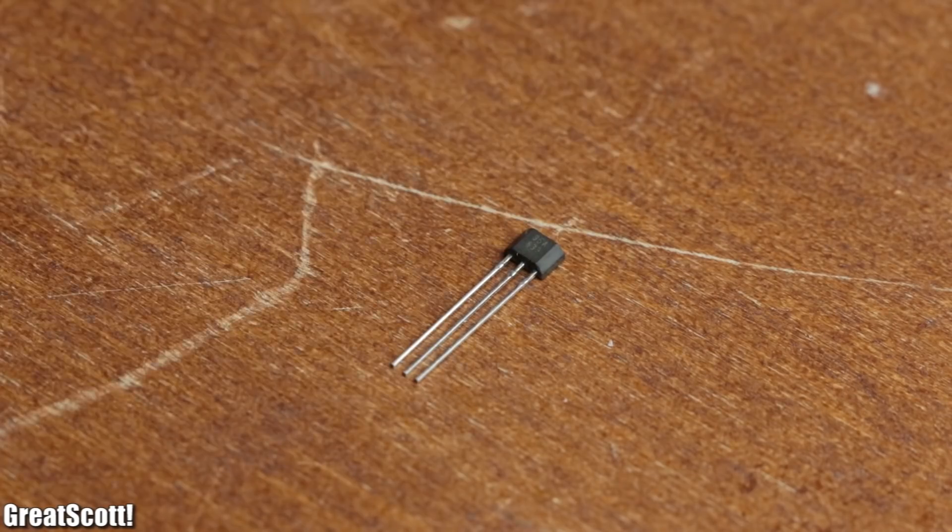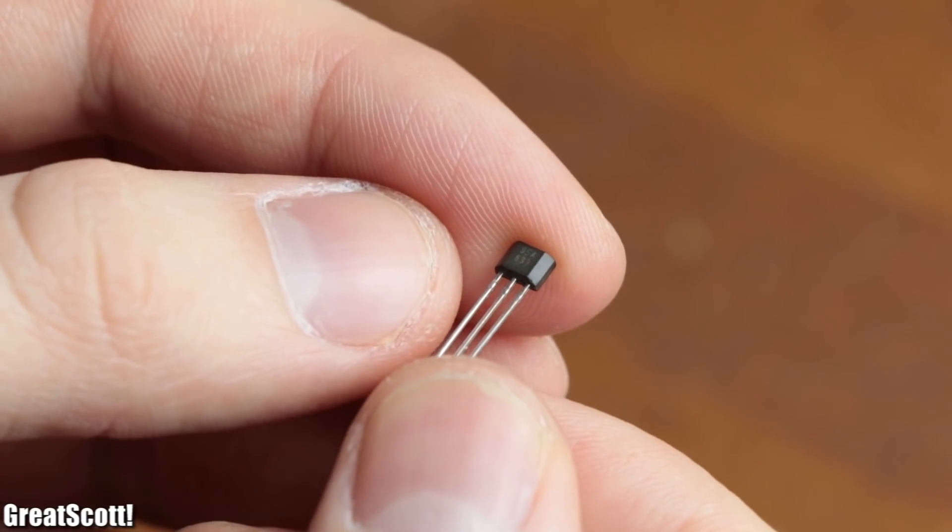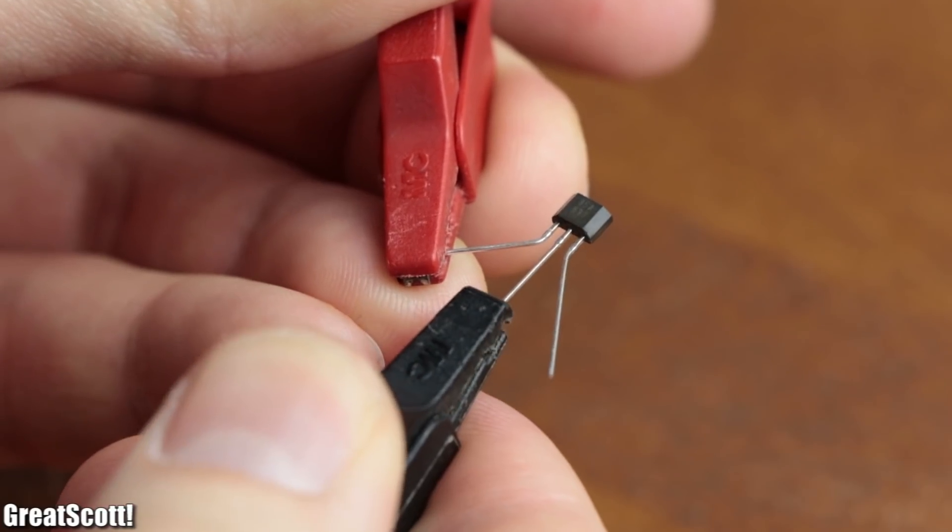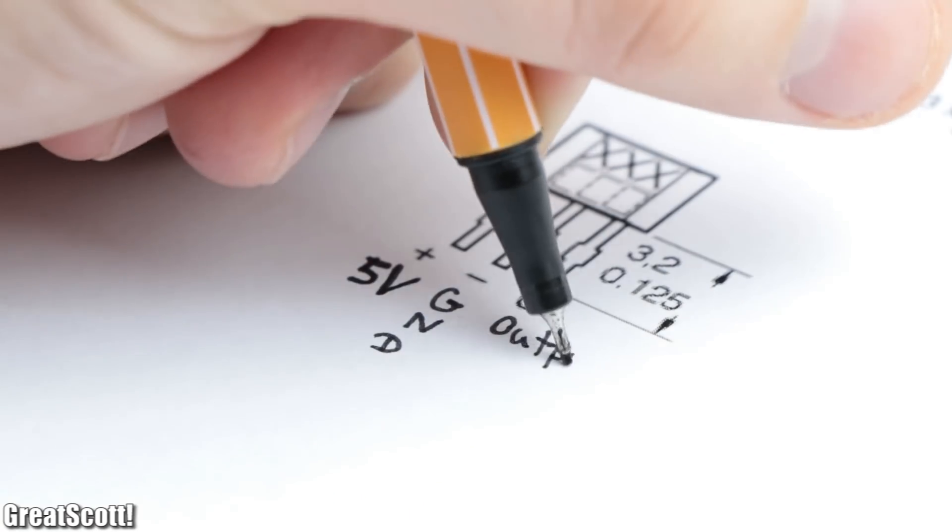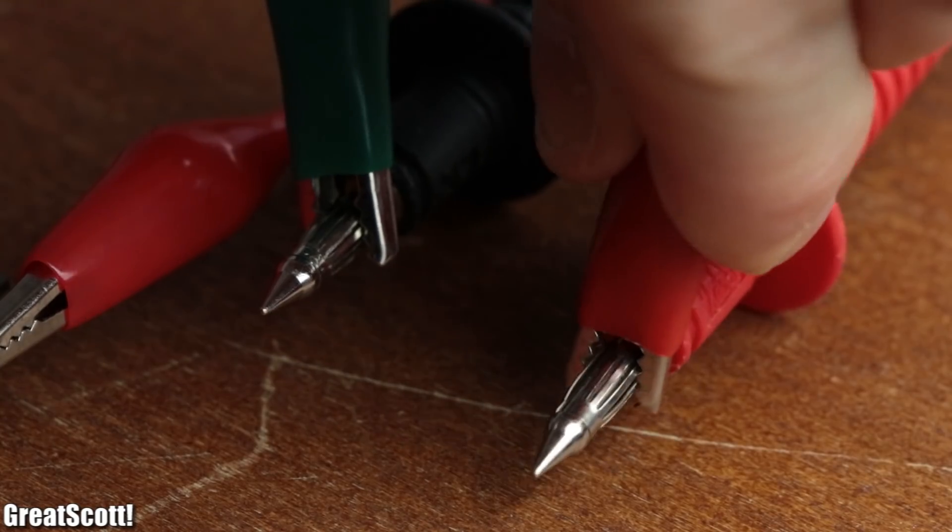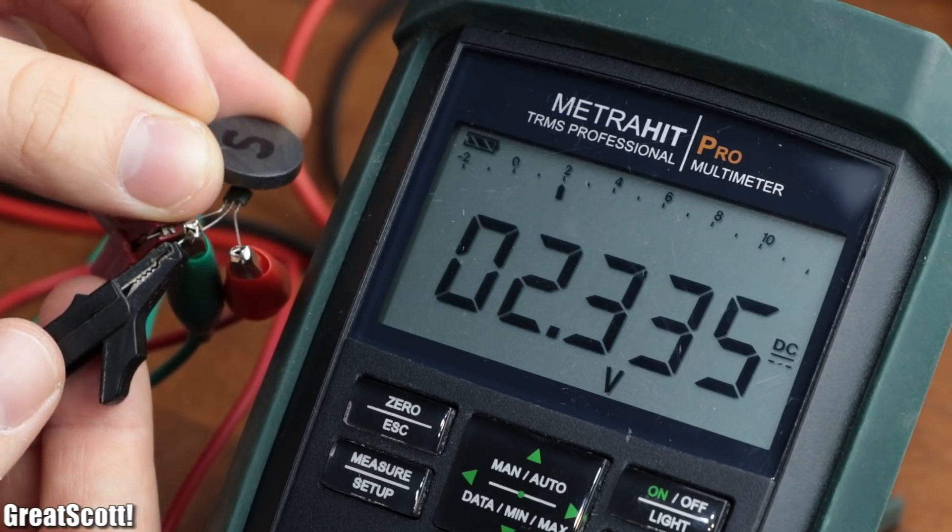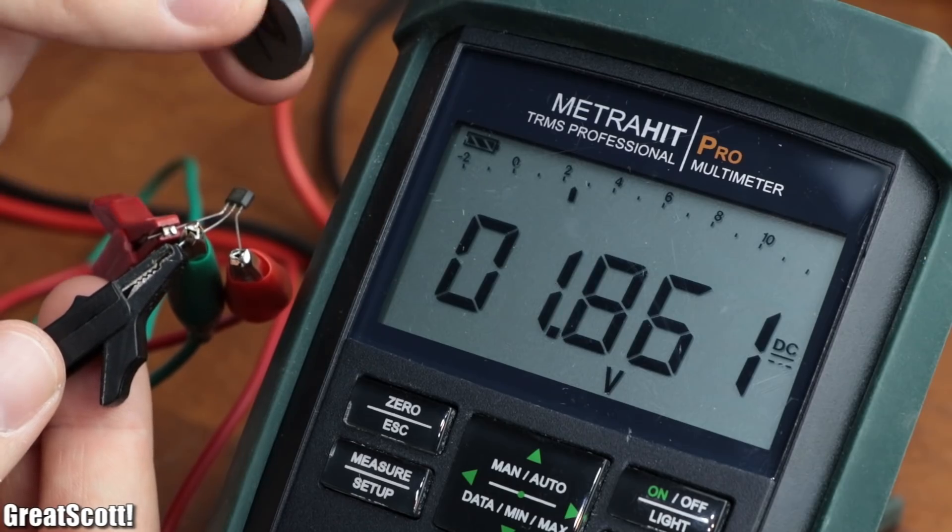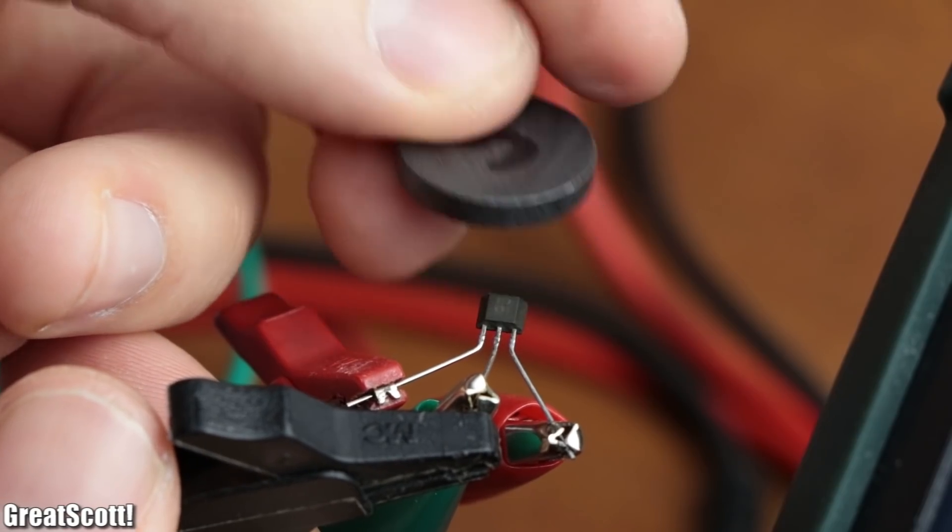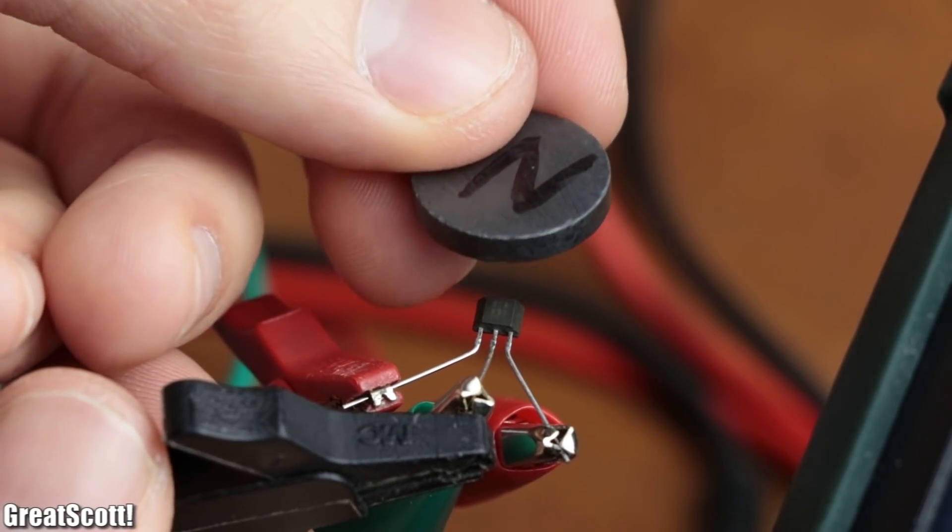A suitable sensor for this task would be this SS495A linear Hall effect sensor. By connecting it to 5 volts according to its datasheet pinout and measuring its output voltage with a multimeter, we can see that its output voltage decreases or increases from a start value of 2.5 volts depending on which polarity of the magnet gets close to it.